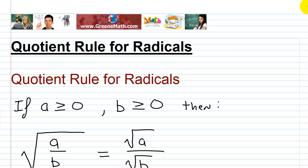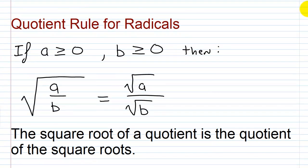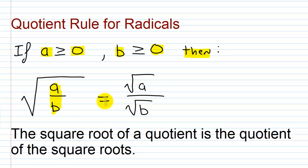In this video we're going to talk about the quotient rule for radicals, which is very similar to the product rule for radicals. If A is greater than or equal to 0 and B is greater than or equal to 0, then using the quotient rule, the square root of A over B equals the square root of A over the square root of B. Basically, the square root of a quotient is the quotient of the square roots.